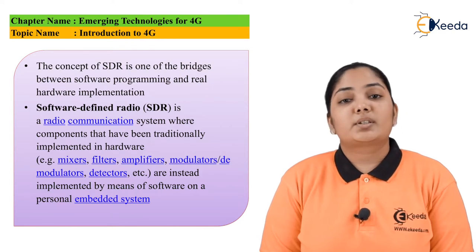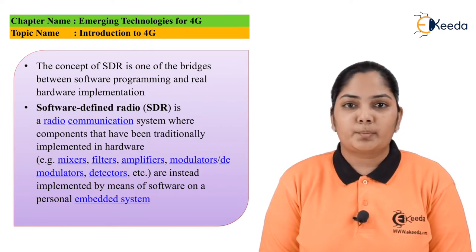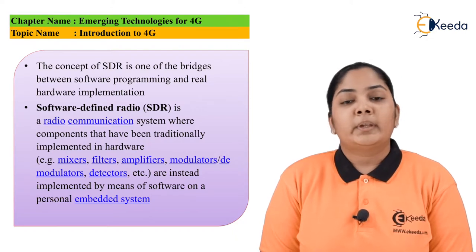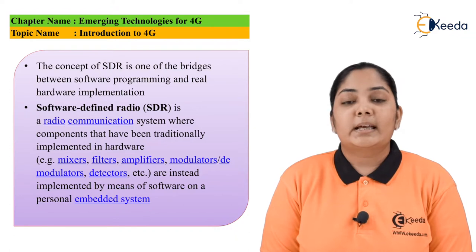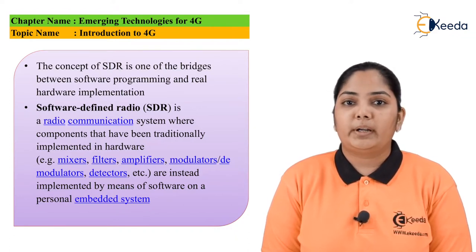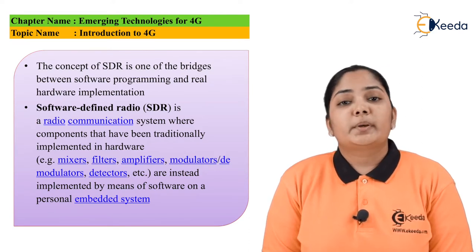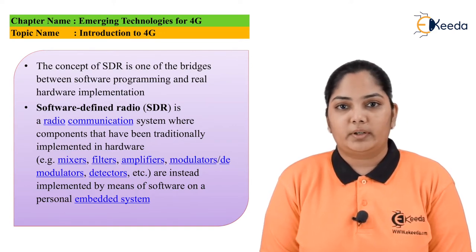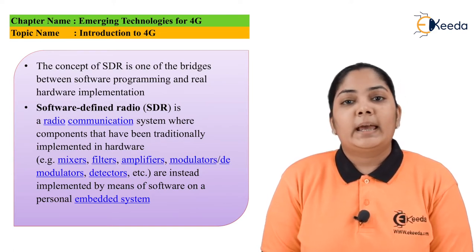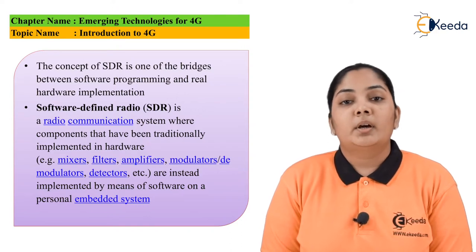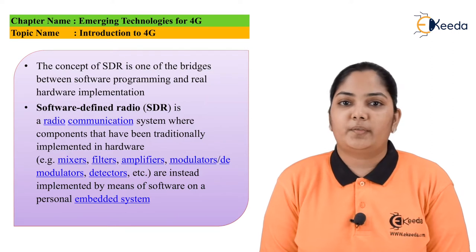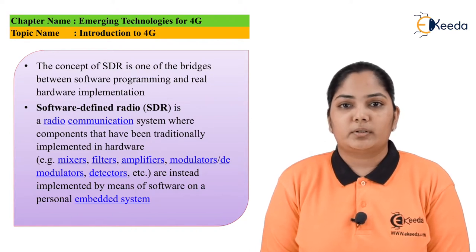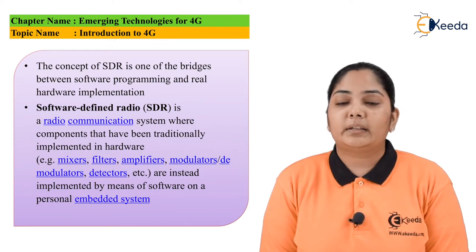The next ingredient is Software Defined Radio. SDR forms a basic bridge between the software that is available and the hardware that has been implemented. In all transmitters and receivers we have basic hardware like mixers, amplifiers, demodulators, modulators, filters, and so on. This hardware allows us to transmit information and form a waveform, but it makes the system extremely heavy. To reduce this impact we are trying to implement the same system using software — hence it is called Software Defined Radio. Software here is defining the radio instead of the hardware that earlier systems had.